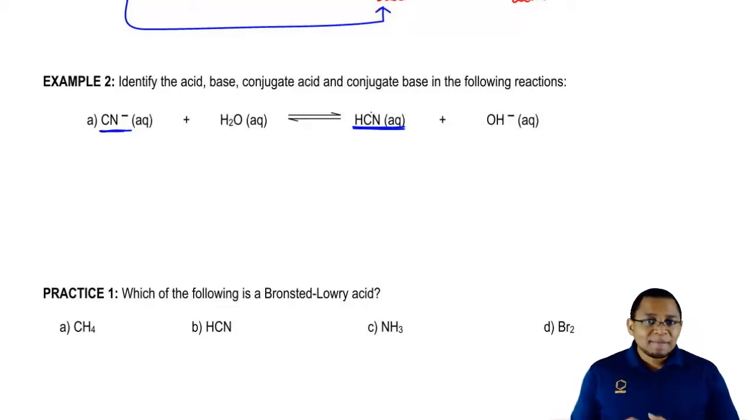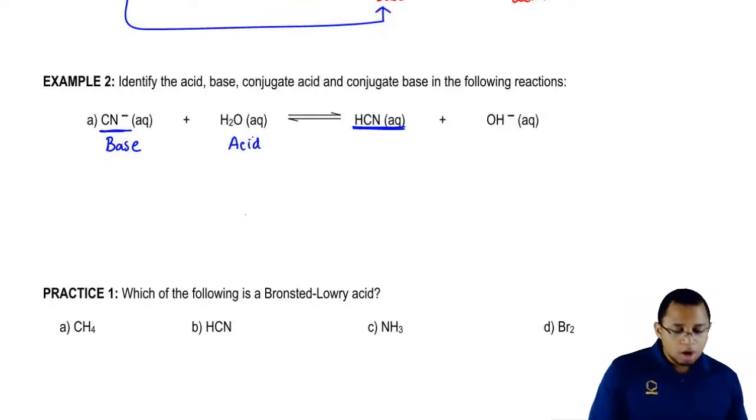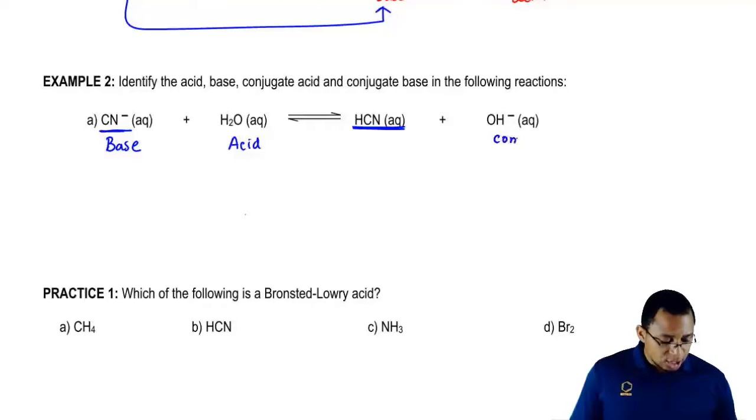The CN must have accepted an H+. Because it's accepting the H+, it's a base. Who's giving it that H+? It must have been the water. Water gives away an H+, making it an acid. When water gives away the H+, what happens to the water? The water becomes OH-, so here we would say that this is the conjugate base.